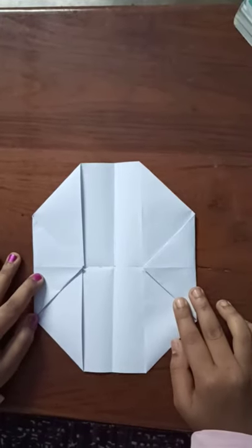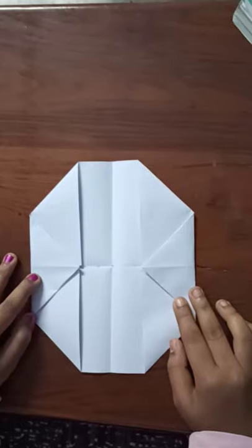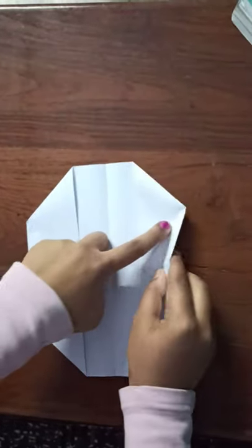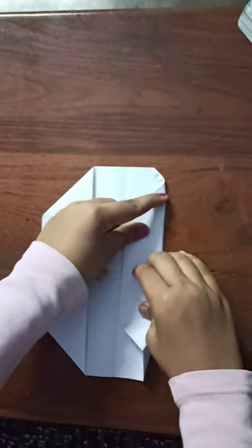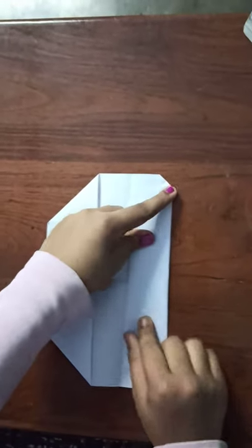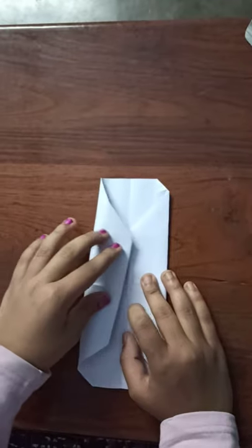Now children, we have to fold again both sides this way. That means this edge of this paper should touch at that line.